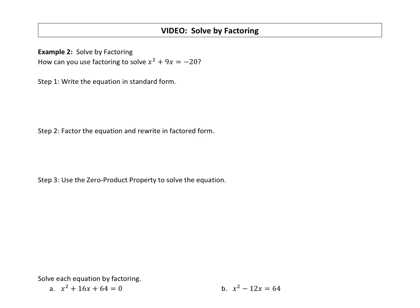Okay, so now we're going to solve equations. Our solving method is going to be factoring. We're just going to build on what we did in the last video. So how can you use factoring to solve this equation? x squared plus 9x equals negative 20.